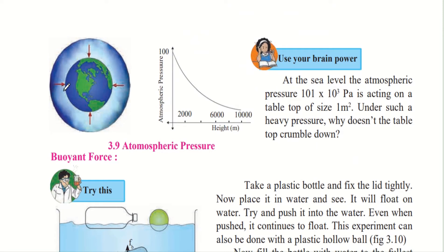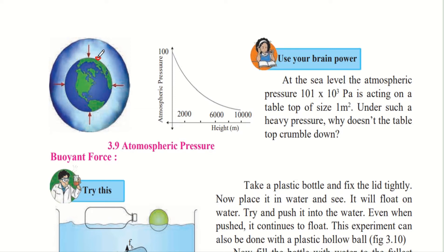On the surface of the earth, the air pressure is very high, but if you travel upward away from the surface, the air pressure becomes very low. This is shown in the graph, where the x-axis represents height — the distance from the surface of the earth. As we move to the right on the x-axis, the height increases and the pressure goes on decreasing.